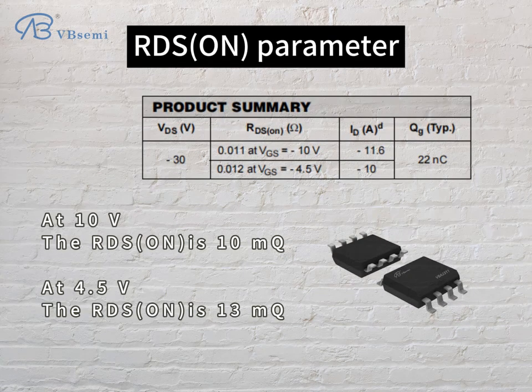RDS on parameter: at 10V, the RDS on is 10MΩ; at 4.5V, the RDS on is 13MΩ.